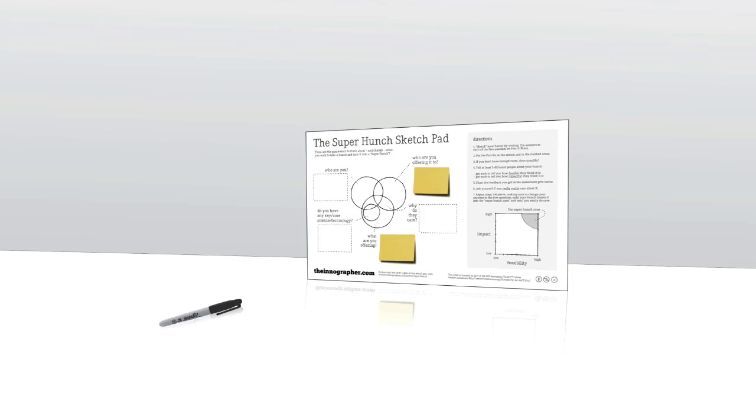The SuperHunch sketch pad is a very early stage idea. Dead simple that you can sketch on the wall, you can put on paper. And it's just an incredibly simple way to prototype. Deceivingly simple, actually, in terms of those five questions.